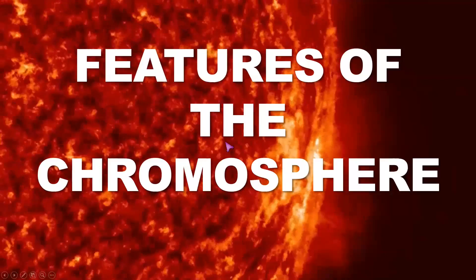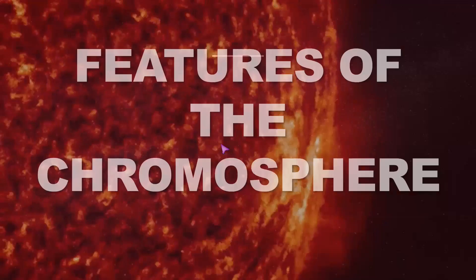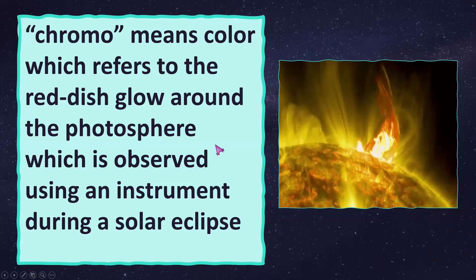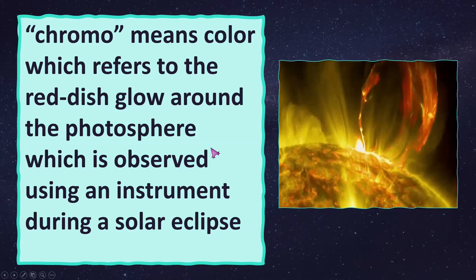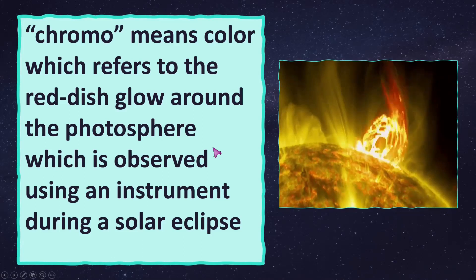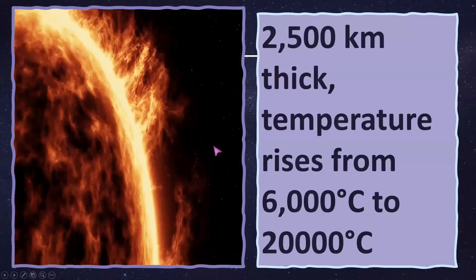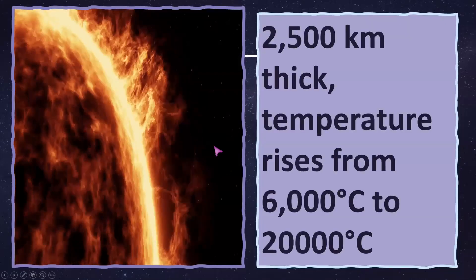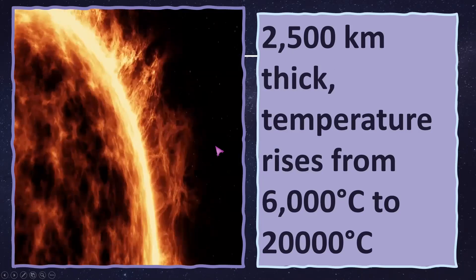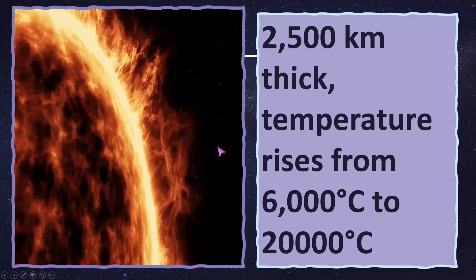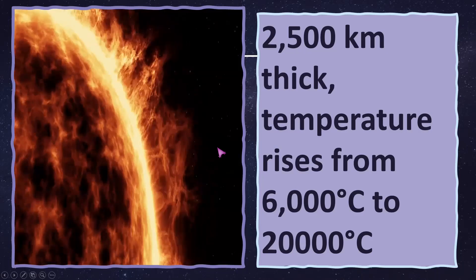Next, the chromosphere. Chroma means color, which refers to the reddish glow around the photosphere observed using an instrument during solar eclipse. It is about 2,500 kilometers thick. The temperature rises from 6,000 degrees Celsius to 20,000 degrees Celsius.